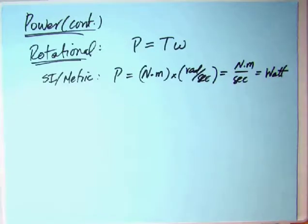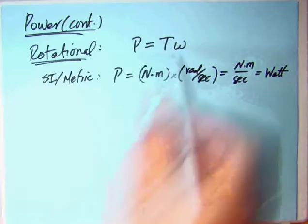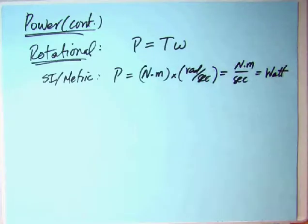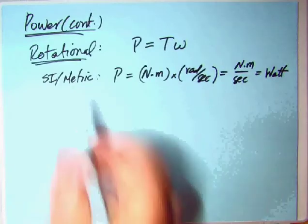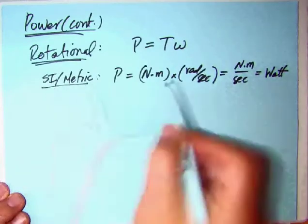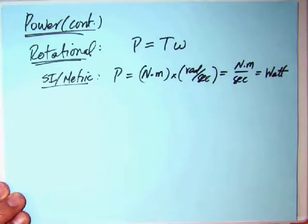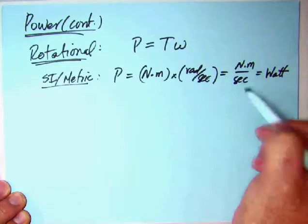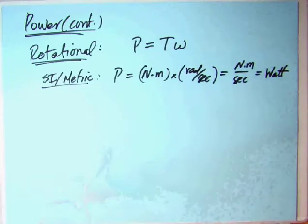Let's look at the rotational units. Power is torque times omega. In the SI metric system, we've got newton meters times radians per second, which is what I recommend you put omega as. It needs to be that for almost every calculation that you make with omega or even alpha, the angular acceleration. You need radians per second or radians per second squared. If you do that, you get newton meter per second, which is a joule per second, which is a watt.